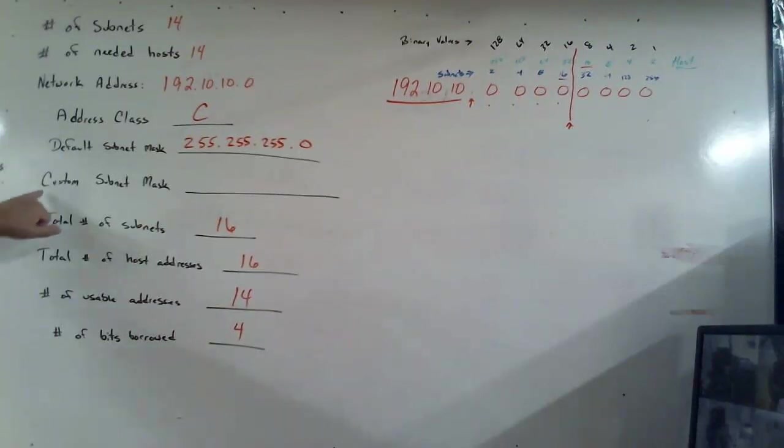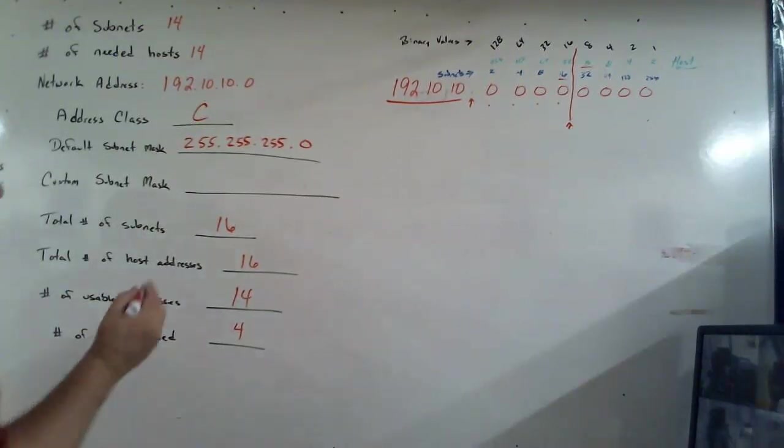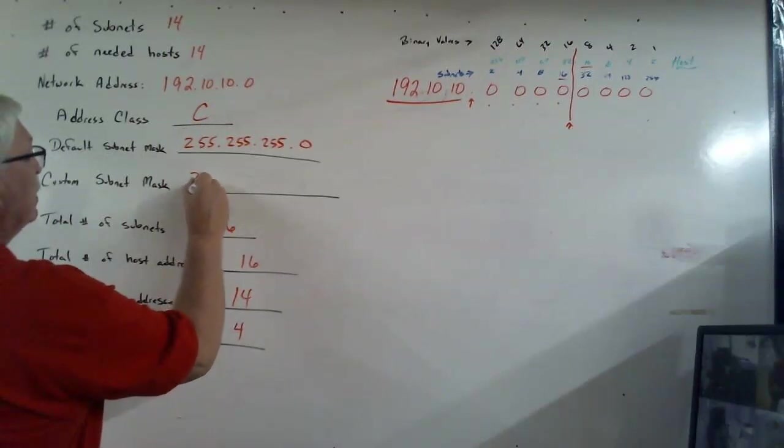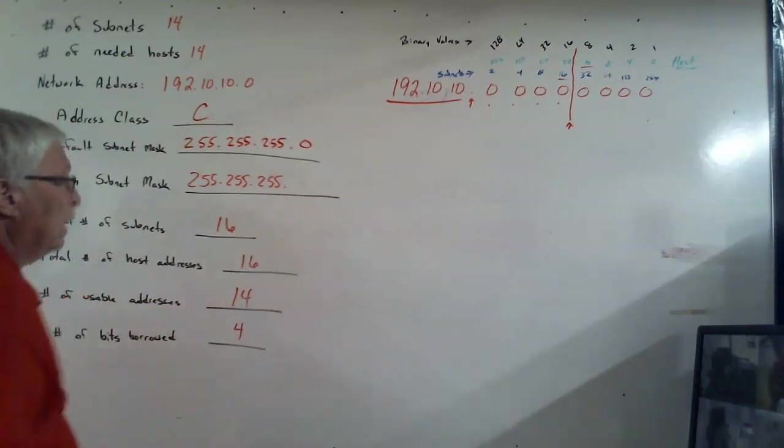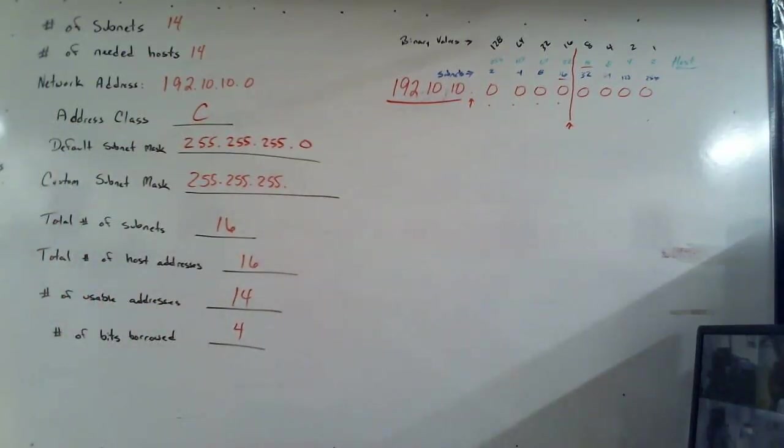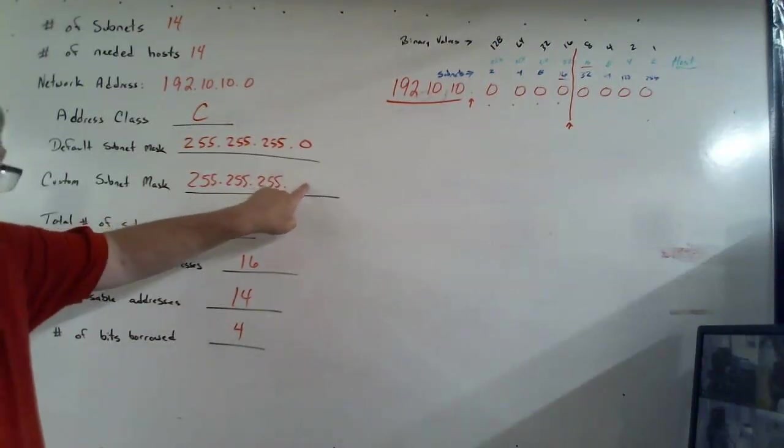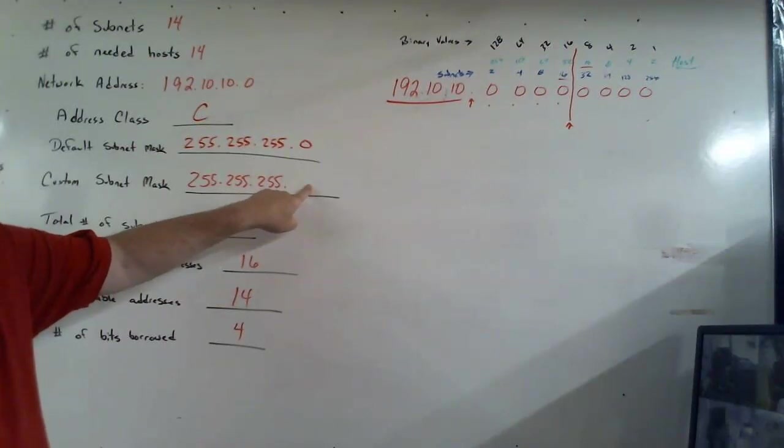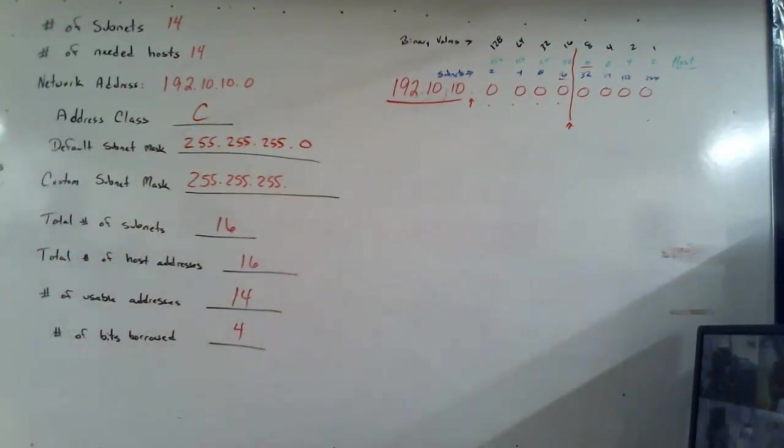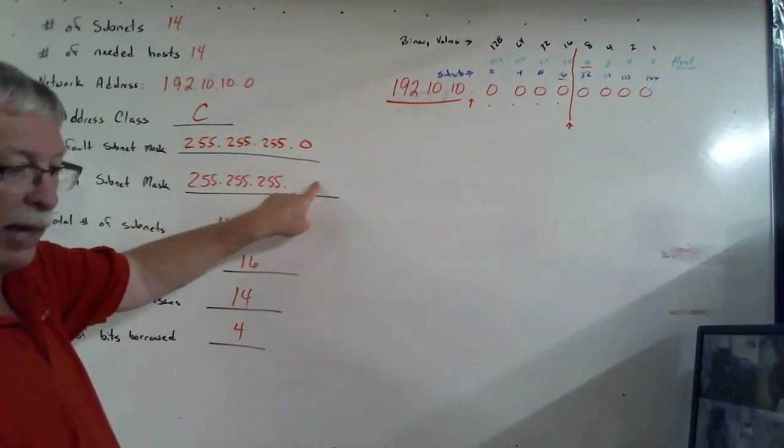The last thing we have to do is our custom subnet mask. And again, we know the very first three 255s cannot be touched. So I'm going to go ahead and put that up here. I'm also going to caution you here for a moment. I often have students that will follow this to the T. They will go ahead and put the first three up here, and they'll forget to go back and put that fourth number. Don't leave it blank because that would certainly be wrong.